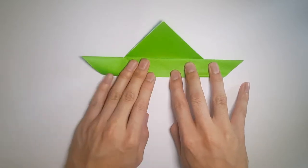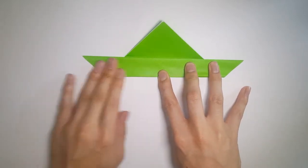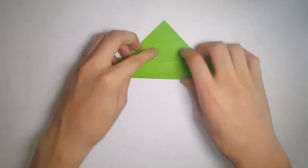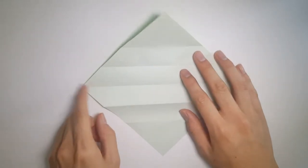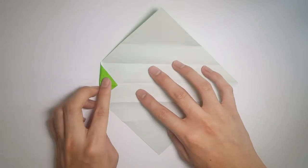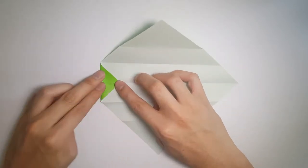Once we've done that, we're going to unfold everything. Now we're given some lines, so with the left side corner, bring that corner in, making sure you don't pass the two horizontal lines.